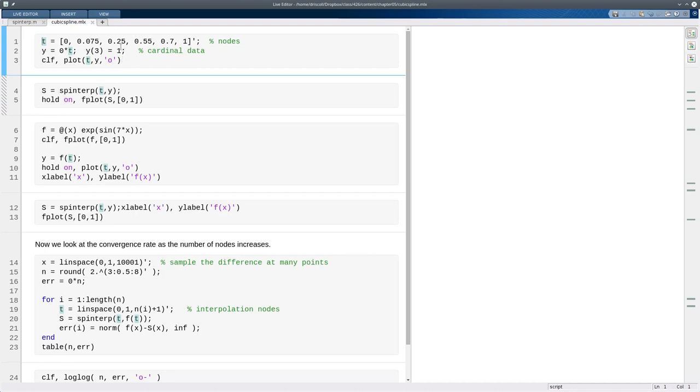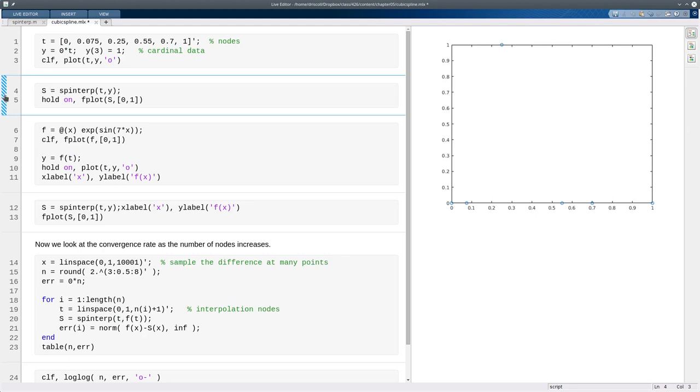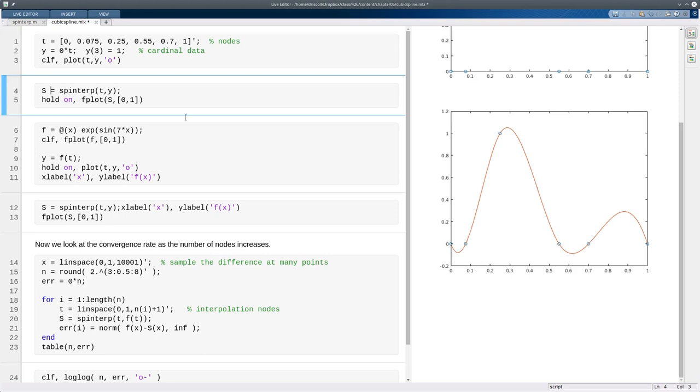Let's take a look at the spline interpolation in action. First we'll look at the case of some cardinal data, so the data is one at one of the nodes, and zero at the others. So the interpolant to that will be a cardinal function. Now unlike the piecewise linear case, it's not easy to write a formula for the cardinal functions in spline interpolation. And in fact the behavior is a lot different too. As you can see,